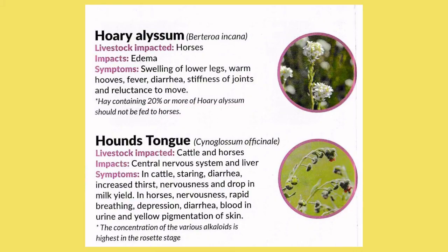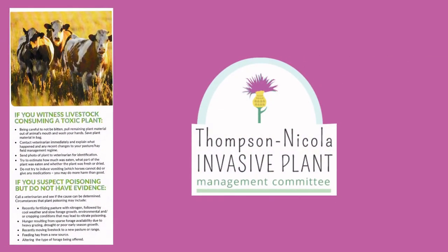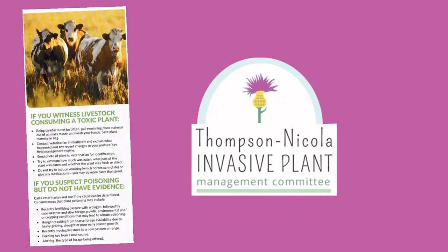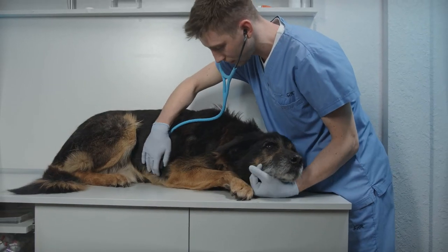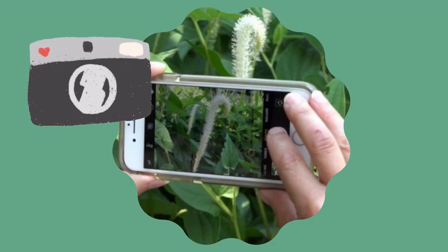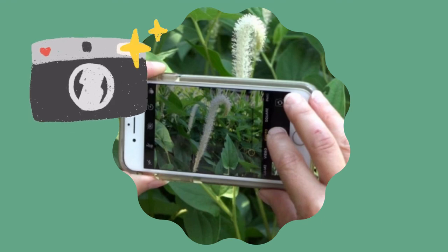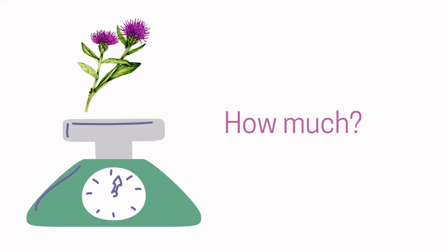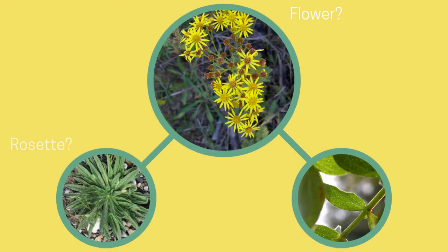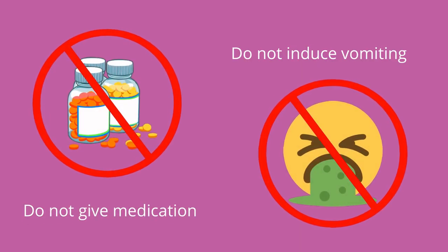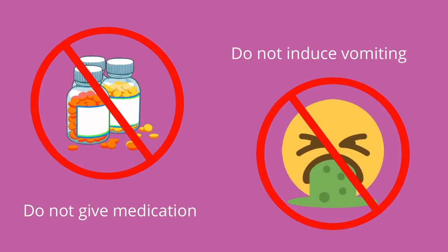Now that you can identify a couple of toxic invasive plant species, let's go over what you should do if you witness your livestock consuming a toxic plant. Carefully pull the remaining plant material out of the animal's mouth and place it in a bag. Don't forget to wash your hands immediately. Contact a veterinarian immediately and send them a photo of the plant for identification. Do your best to estimate how much of the plant was eaten, what part of the plant was eaten, and if the plant was fresh or dried. Do not try to induce vomiting or give any medications, as this can do more harm than good.